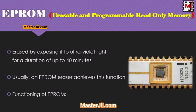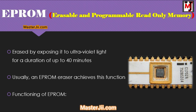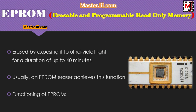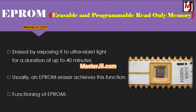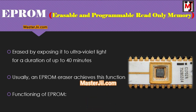The third type is EPROM — Erasable and Programmable Read Only Memory. EPROM can be erased by exposing it to ultraviolet light for a duration of up to 40 minutes. Usually an EPROM eraser achieves this function. During programming, an electrical charge is trapped in an insulated gate region. The charge is retained for more than 10 years because the charge has no leakage path.